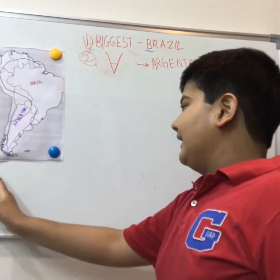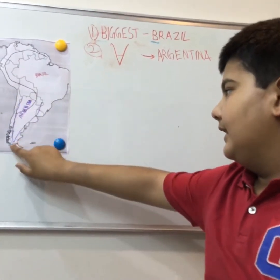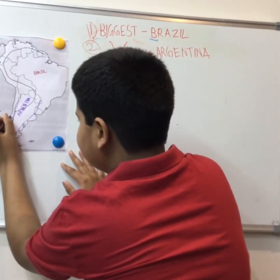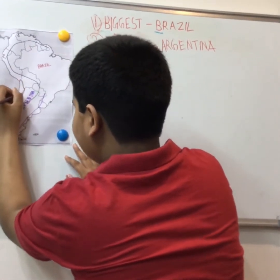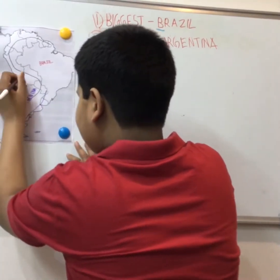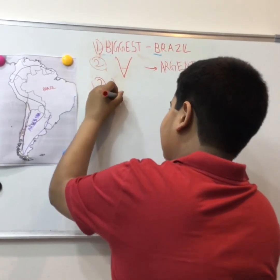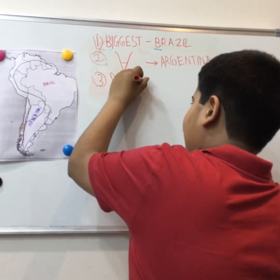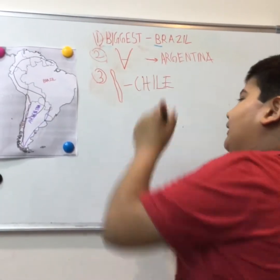The third country is very interesting — it is in the shape of a chili, like a red chili. And its name corresponds to that shape, which is Chile. So the hint to remember it: chili-shaped Chile.